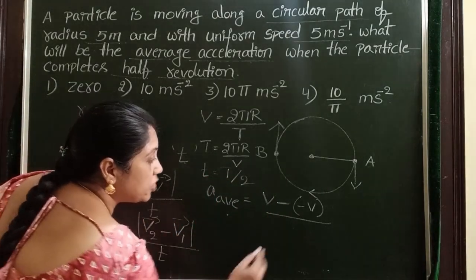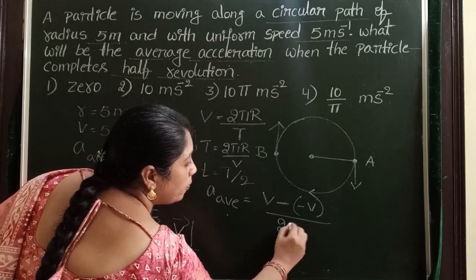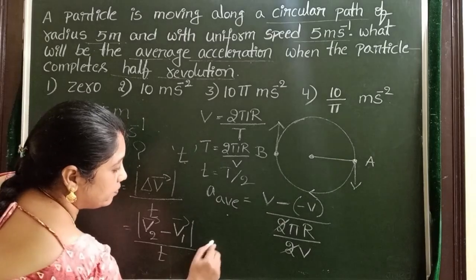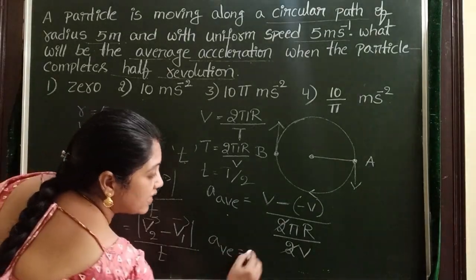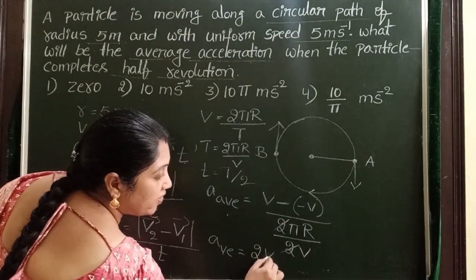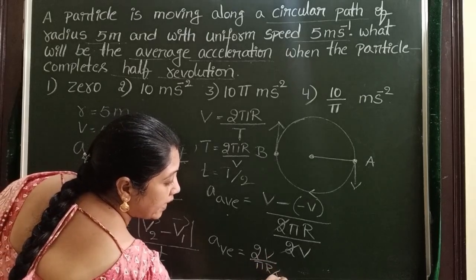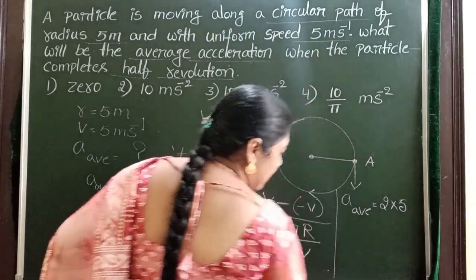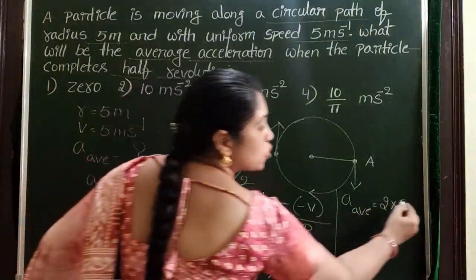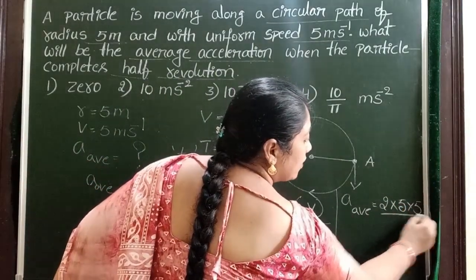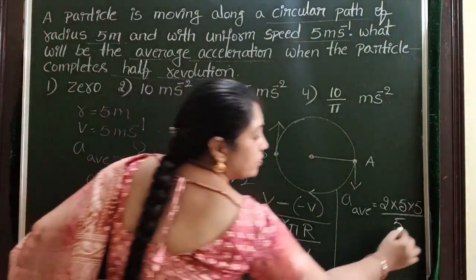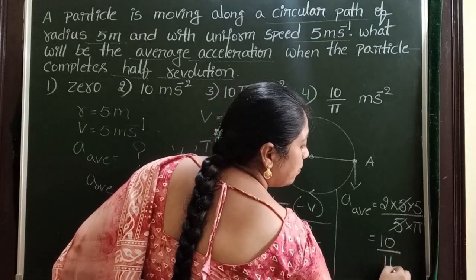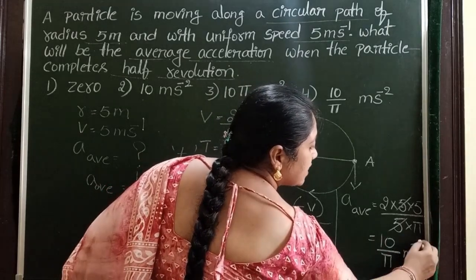In place of T, substitute 2πr by 2V. So 2 gets cancelled. Average acceleration is equal to 2V by πr. 2 into 5 meter per second, and this V also goes to numerator into 5, and given radius is 5 meters. 5 by 10 is 10 by π meter per second square.